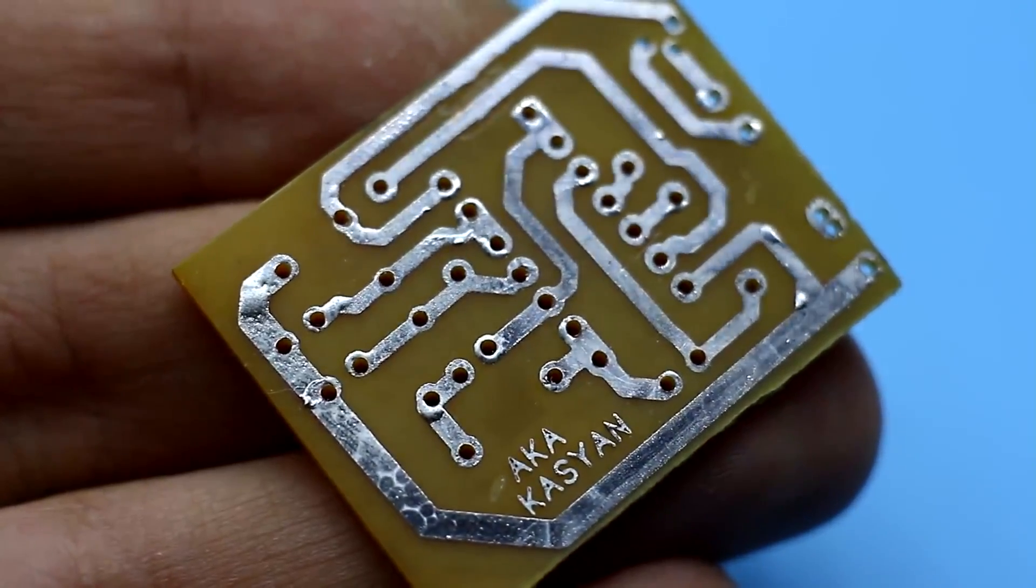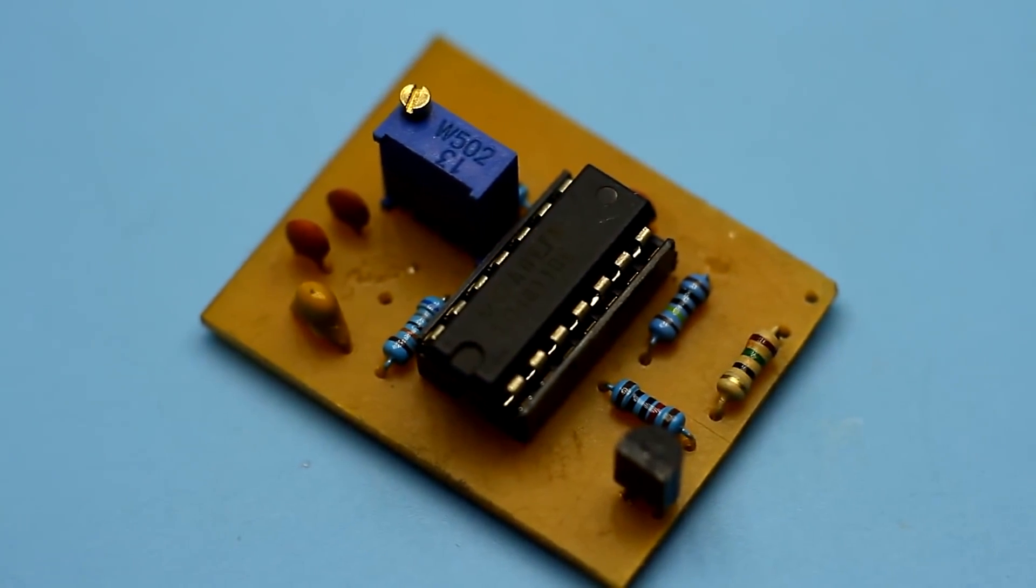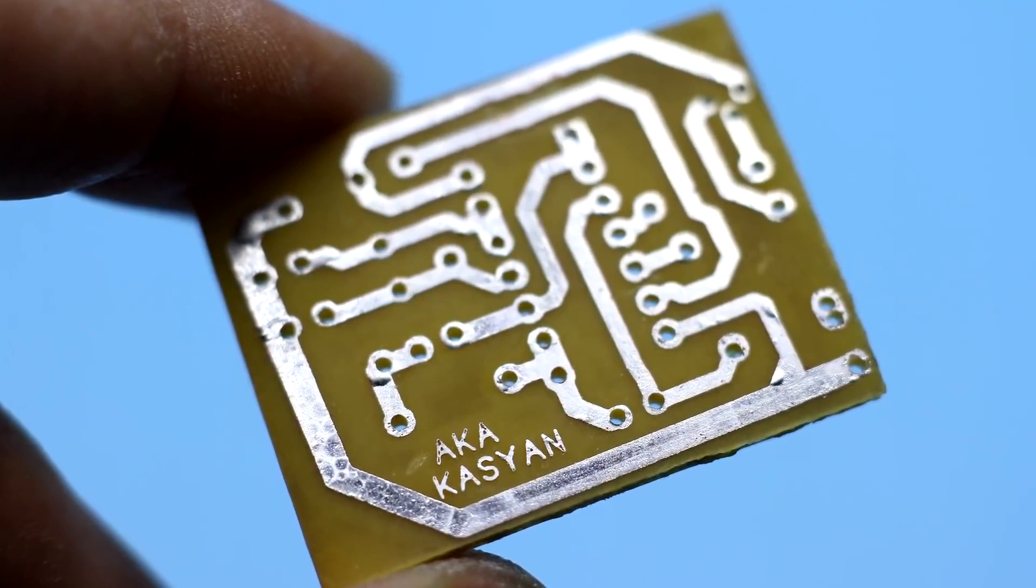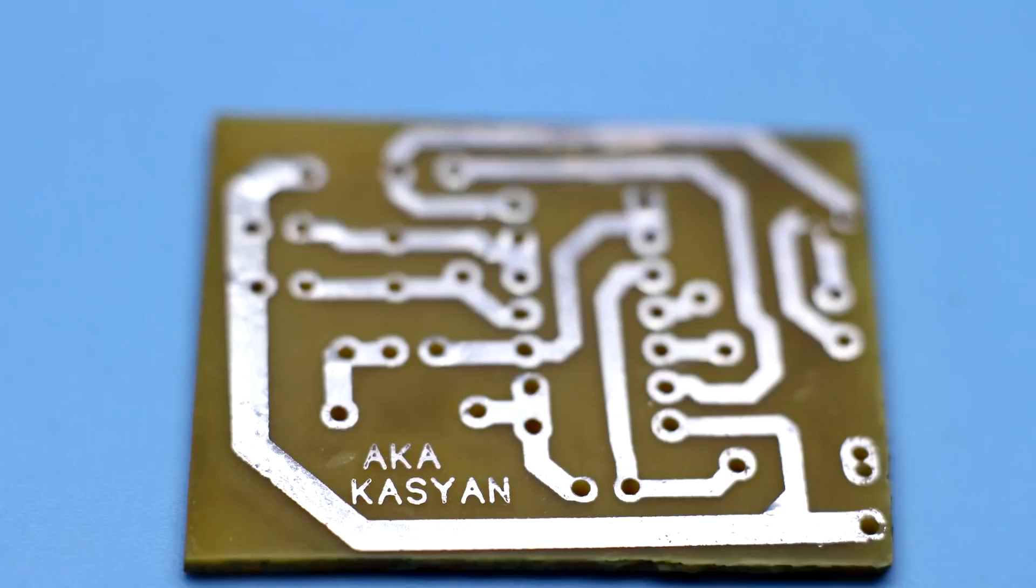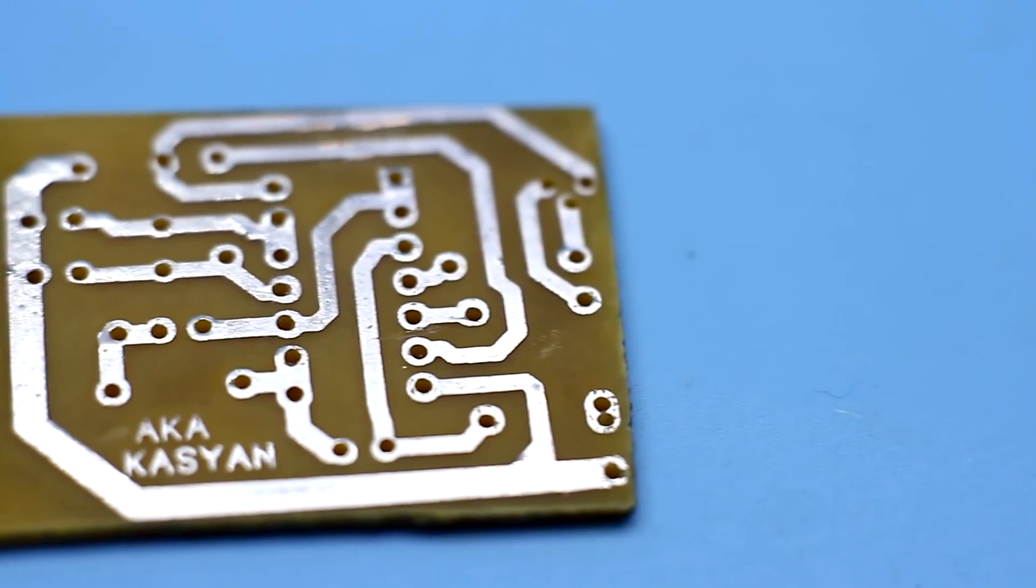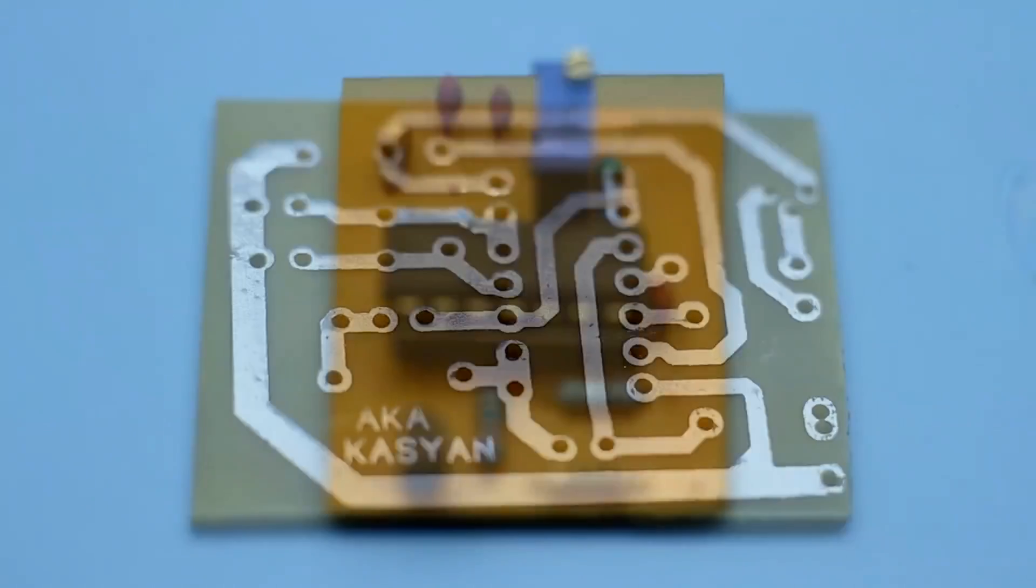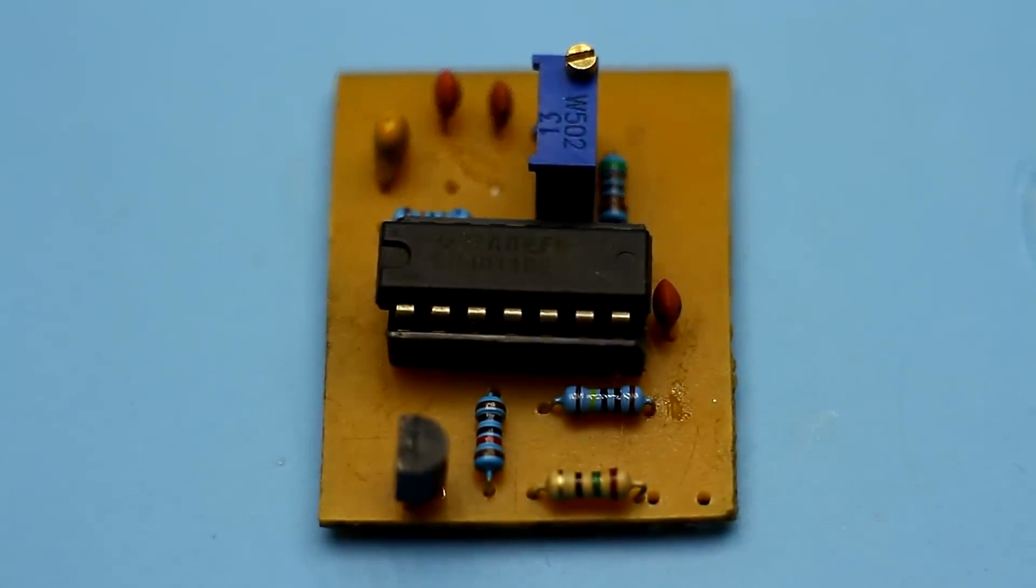All I had to do was creating a printed circuit board and solder the components. The PCB turned out to be quite compact. It was made using the laser iron technology. In the description under the video, you will find a link to the project archive with a printed circuit board file in the lay format, as well as the circuit and a list of components.